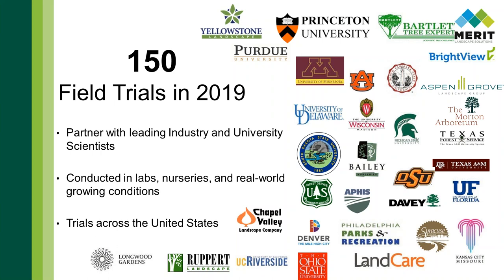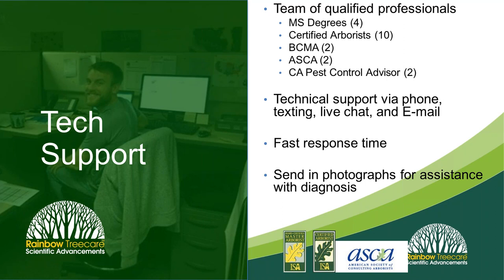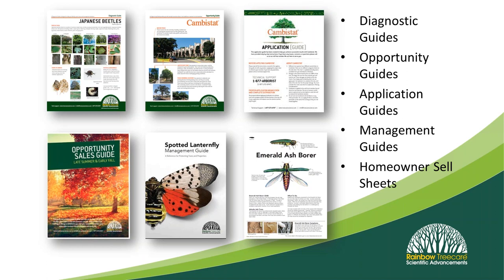A quick background on Rainbow Scientific: we are a company based in research. When we bring a protocol or product to market, know that it is backed by replicated trial research. We partner with a host of research institutions and private companies, and we did over 150 field trials in 2019 alone. We also provide in-field and virtual training, and a full host of tech support for tree and shrub care products, protocols, and equipment.